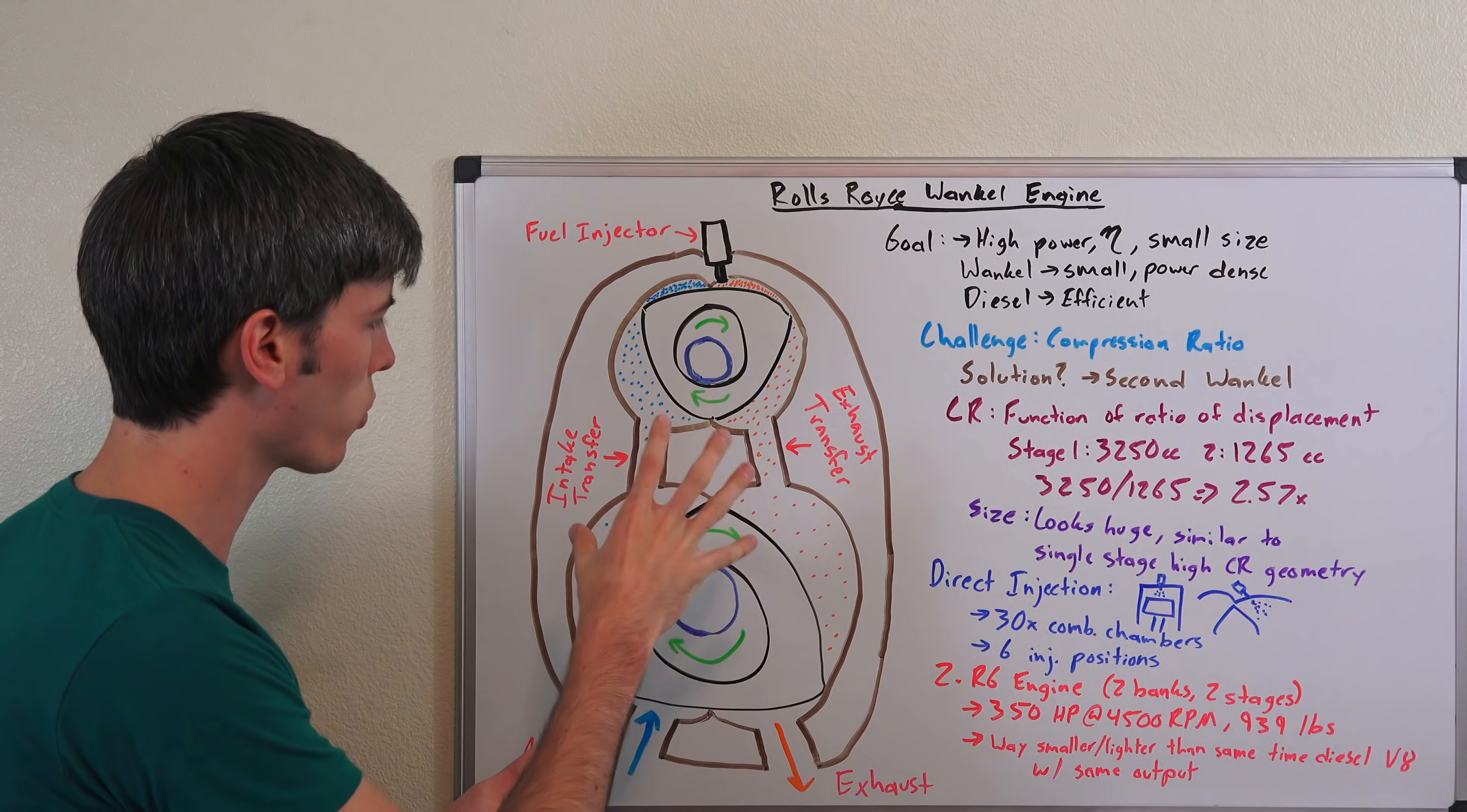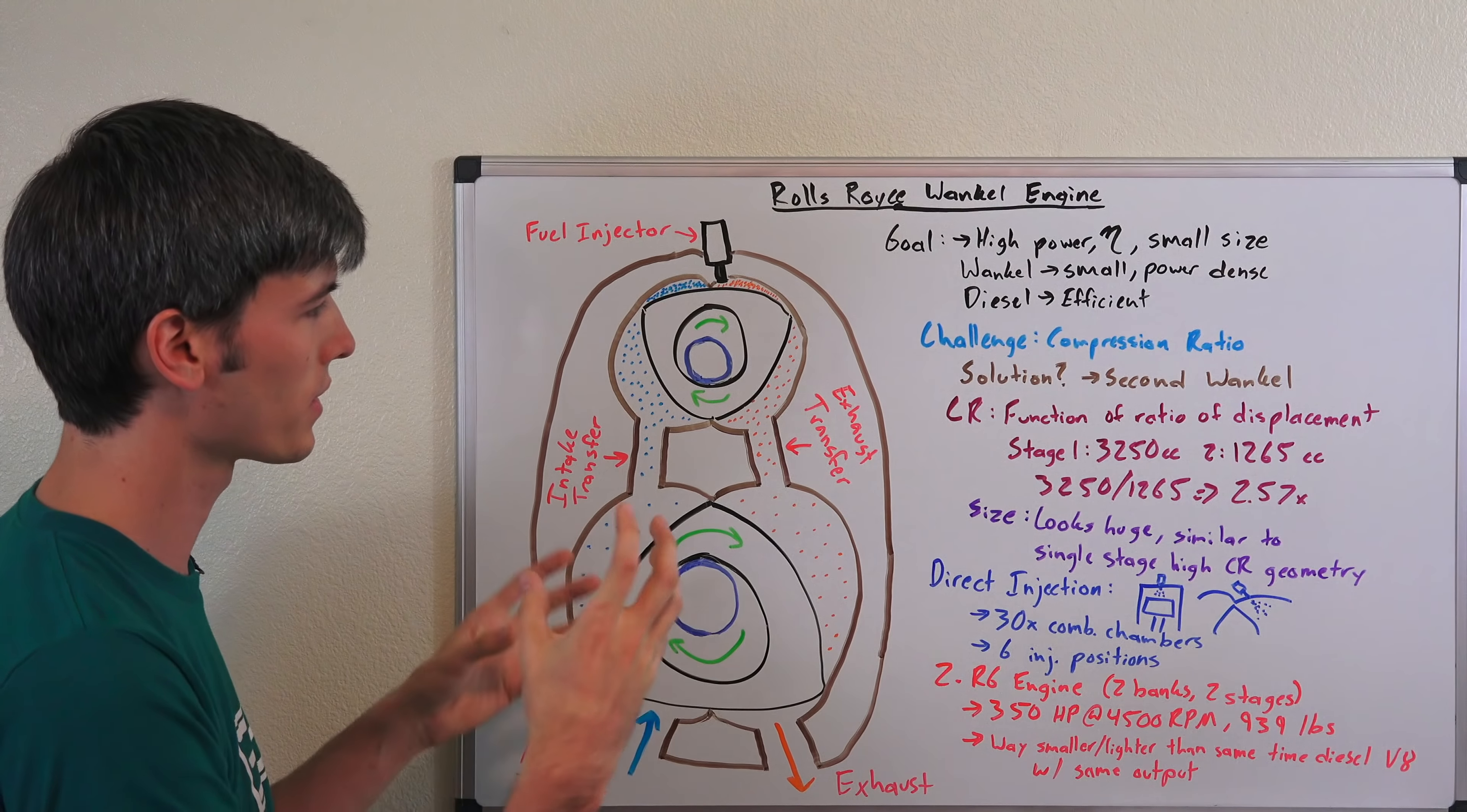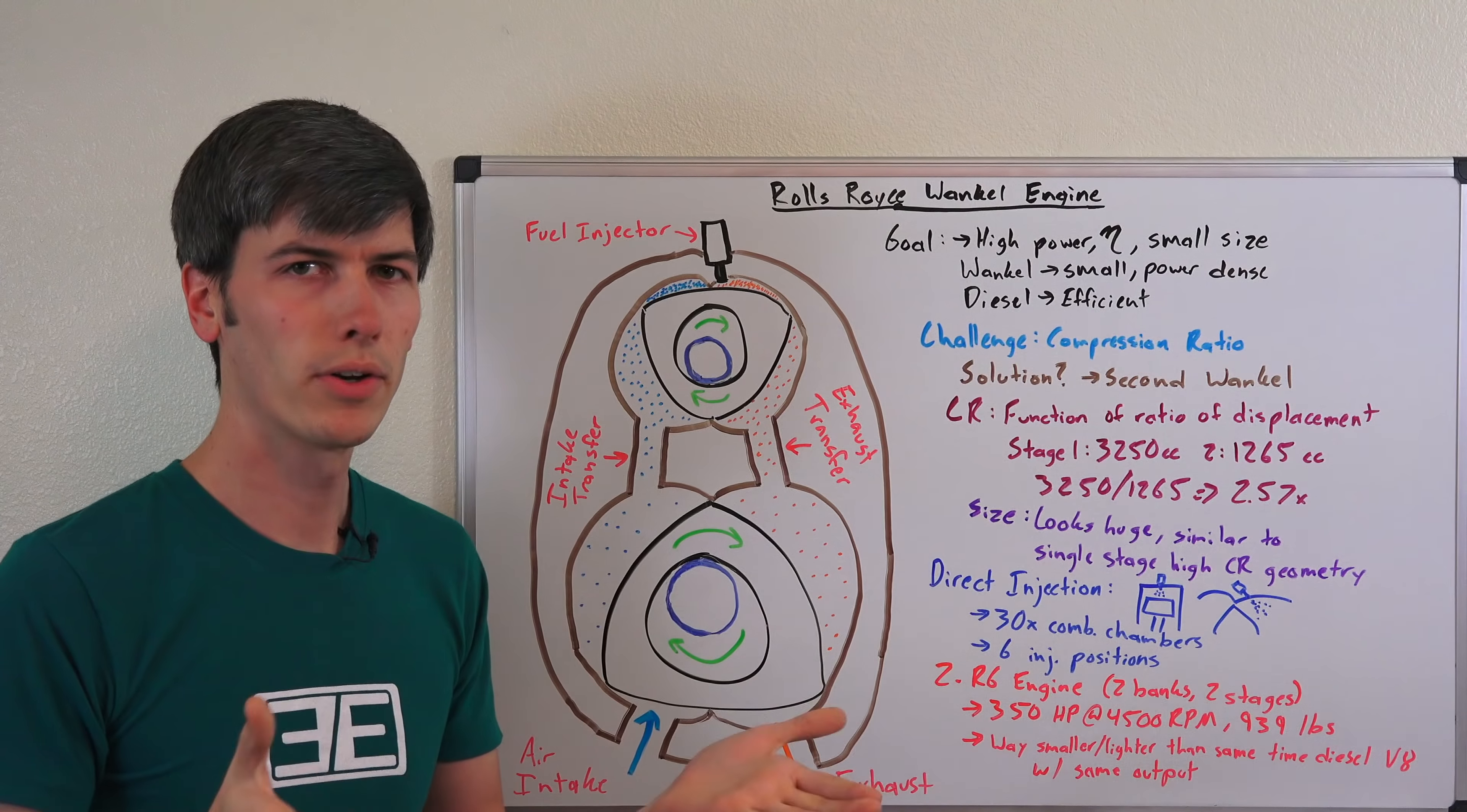Now you may be thinking, wow, this is huge. Why would they use something so big to compress air for that other stage? But actually they looked into just doing a single rotor with a high compression ratio simply by using the geometry of how it's designed, and in order to do that it requires a really large footprint. So a single rotor with a high compression ratio would be very similar in size to these two rotors using this to increase your effective compression ratio. So overall the size is actually pretty compact even though it looks enormous.